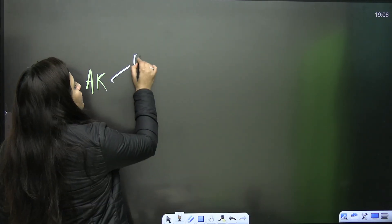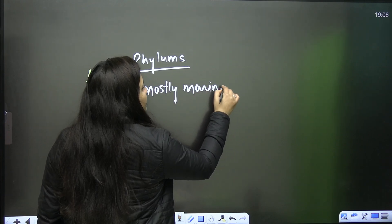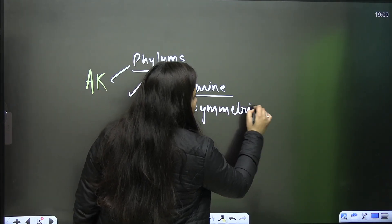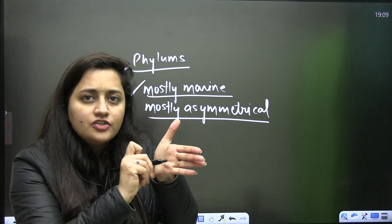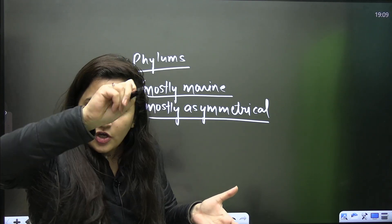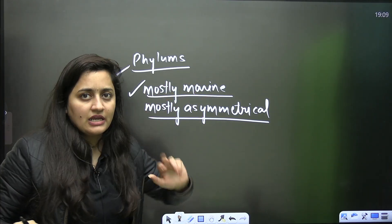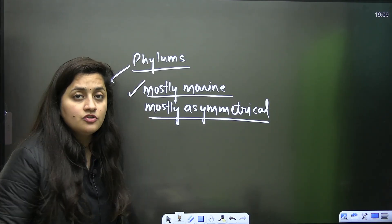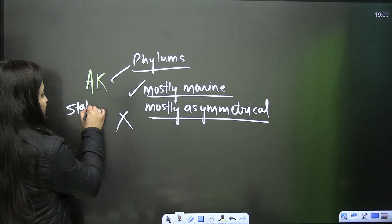In Animal Kingdom, when you read about phyla, they mention words like 'mostly marine,' 'mostly asymmetrical.' You should highlight such words while reading the NCERT. For that, do not go for a highlighter — just use a pencil, put a circle or square wherever such things are written. Because in the final paper, I can change the statement — 'all the polypherons are asymmetrical' — which is not a fact. So you need to mark such lines.